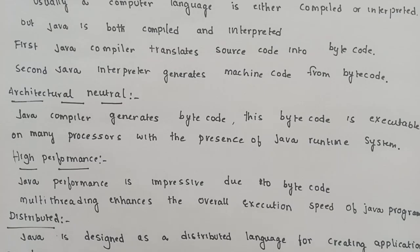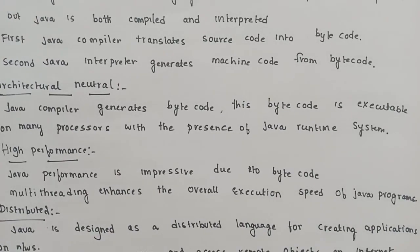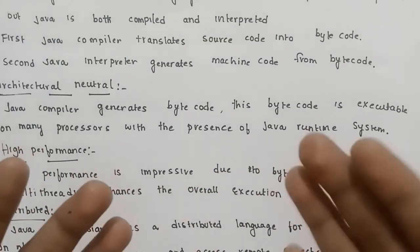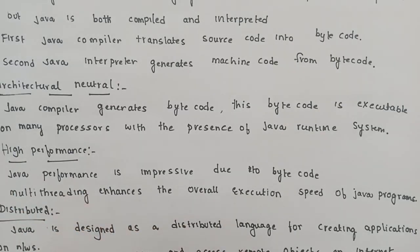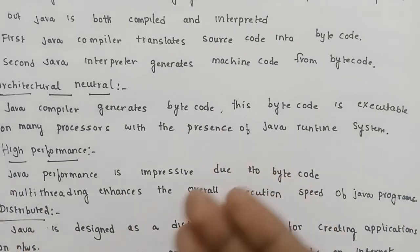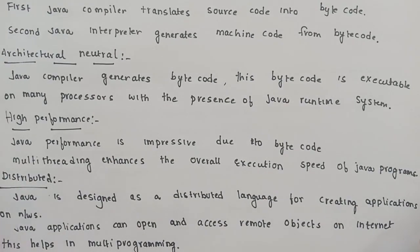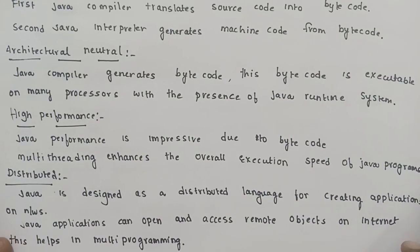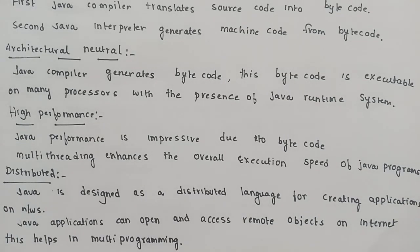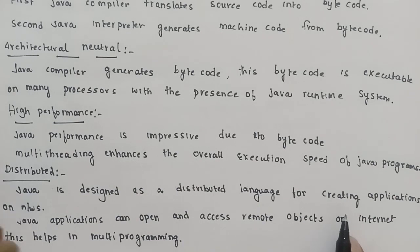Bytecode is the output of Java. This is multi-threading — multi-threading means more than one task at work, so Java supports a multi-threading concept. The execution speed of Java programs improves performance. Java is also a distributed language designed for creating applications on networks. Java uses networking to create different network applications and retrieve data from particular systems.